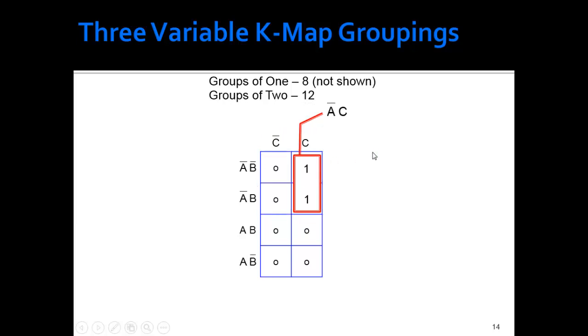Again, what changed was B, so I have not A, that I take from here, and C, that I take from here. So as I move through those, you can see A changed, so I threw it away. A changed, so I threw it away. B was the constant, C was constant.